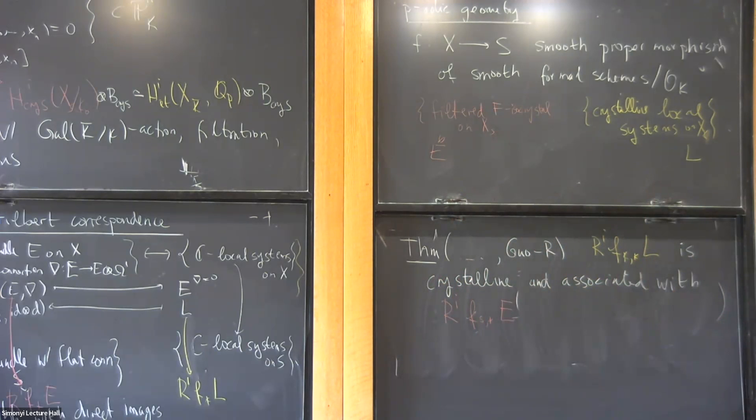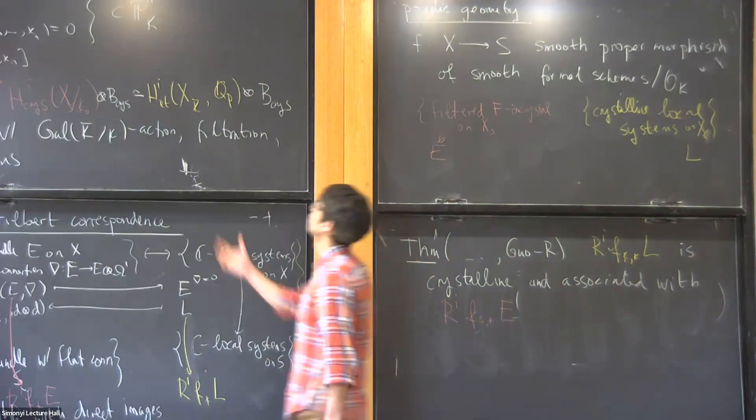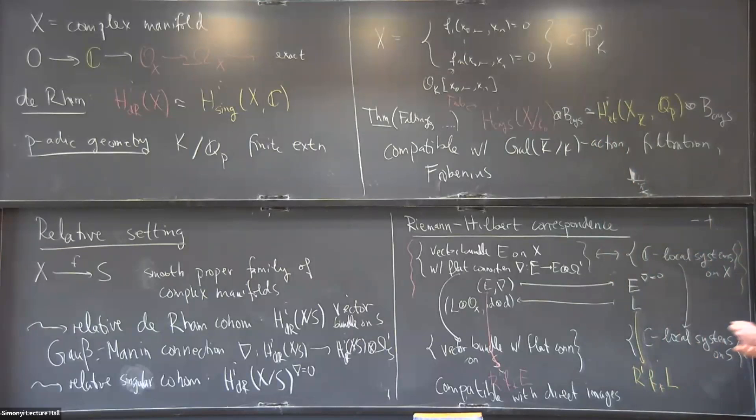Again, when S is a point, this recovers this sort of comparison. I should also point out there was a lot of previous work when this map actually came from a map of smooth, proper schemes. This was already in this work of Faltings. There's also work when k is an unramified extension and many more works. Also, a lot of dots here.